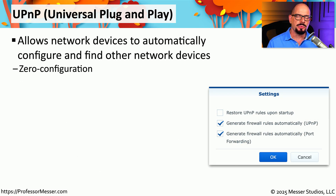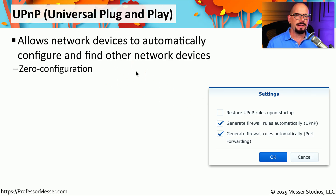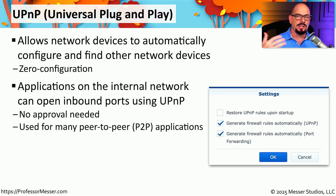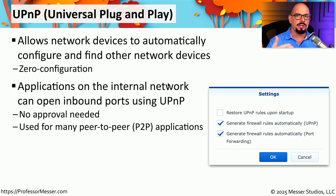One of the challenges with SOHO devices is there's not usually an IT technician available to do configurations. This is why UPnP — Universal Plug and Play — was created. It's a feature built into these small office routers that allows them to be configured using software running as an application, meaning we don't have to log into the router and make configuration changes manually. We simply start an application on our local internal network, and that application will communicate with your router using Universal Plug and Play to make configuration changes allowing inbound traffic to that application.